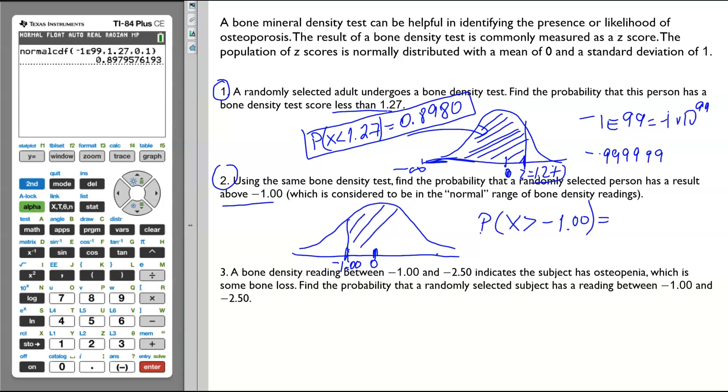In the graphing calculator, go to 2nd, VARS, normalcdf. Now, we're going to change the lower limit to negative 1. Negative 1. You can type 0.00, but you don't have to put the zeros.